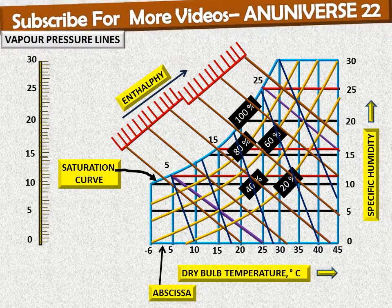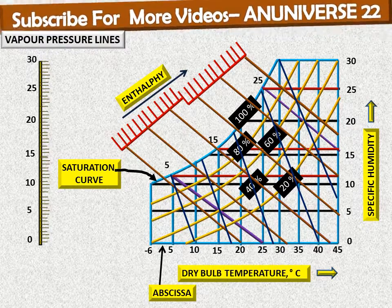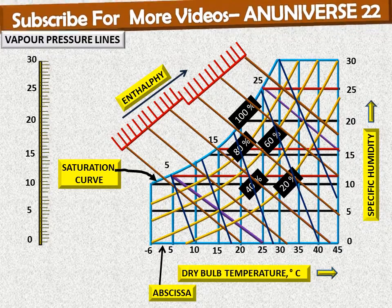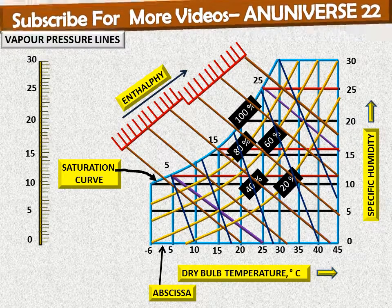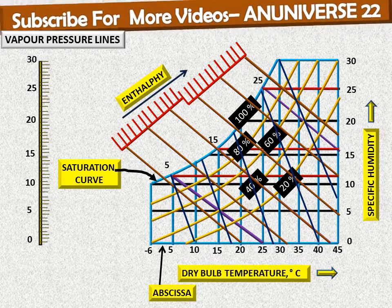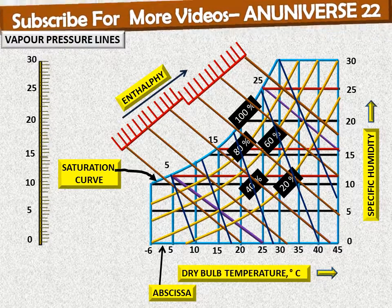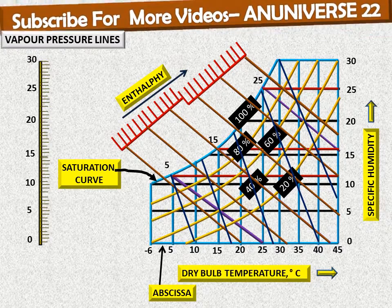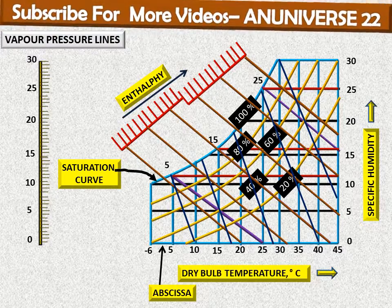On the psychrometric chart, the various lines indicate psychrometric terms showing the condition of air. If dry bulb or wet bulb temperature are known, relative humidity can be determined. If dry bulb temperature and relative humidity are known, wet bulb temperature can be found. If wet bulb temperature and relative humidity are known, dry bulb temperature can be read. If both wet bulb and dry bulb temperatures are known, dew point temperature can be found. If wet bulb and relative humidity are known, or if dry bulb and relative humidity are known, dew point can also be read from the chart.